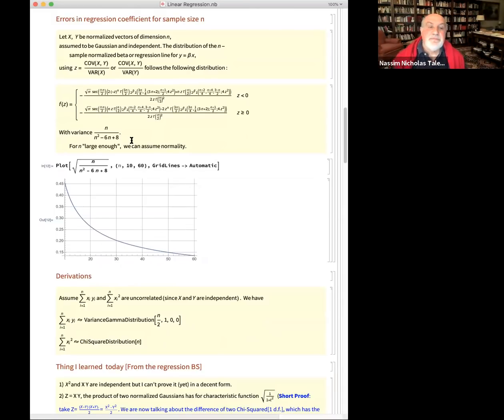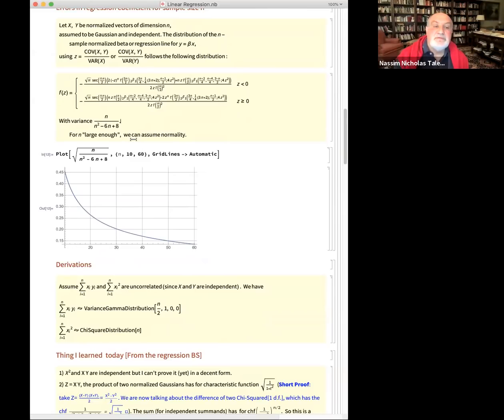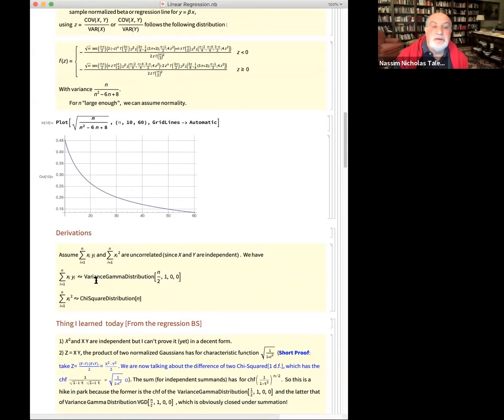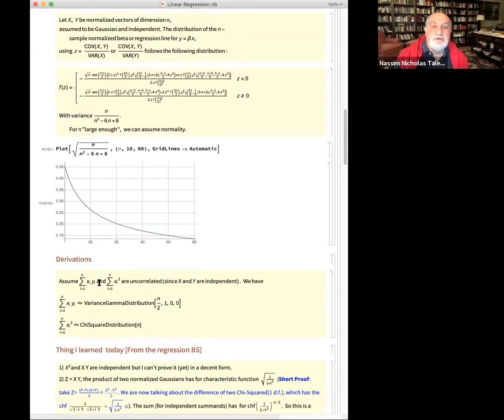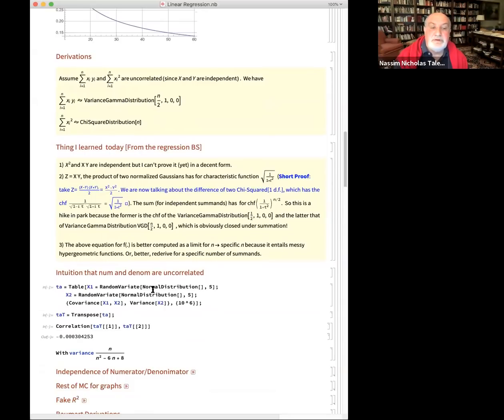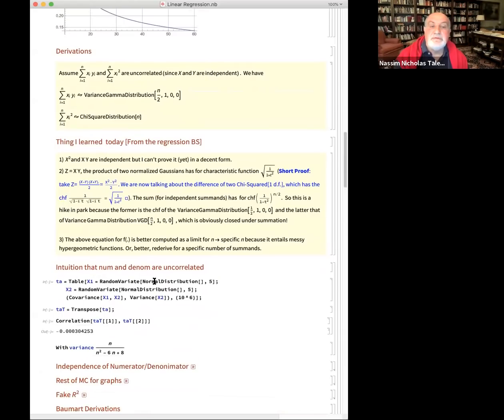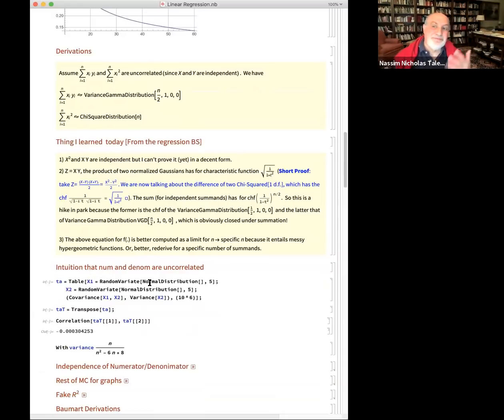This above, when n is above 50, 60, 70 number of points, you can substitute to a normal. How did I do that? Very simply I assumed that the numerator, which is the covariance, and the variance of y are independent. And effectively there is a quite convincing argument that they're independent. I did Monte Carlo before doing the theorems and came up with results.